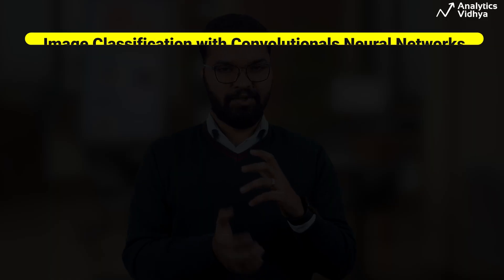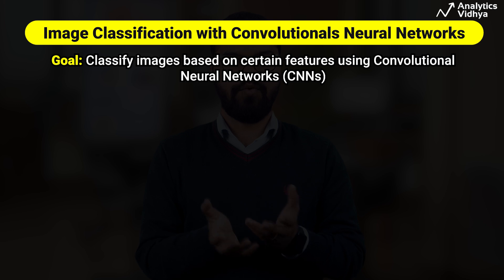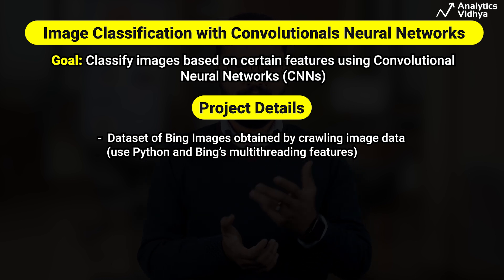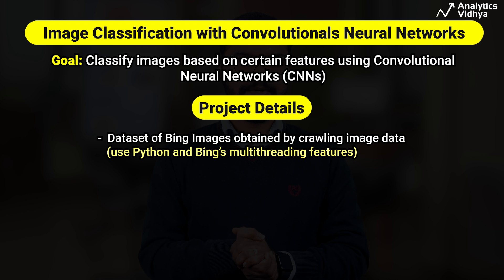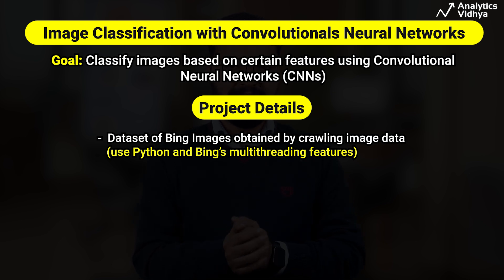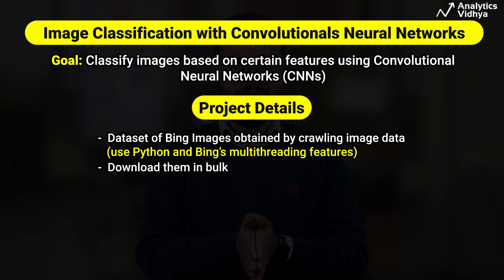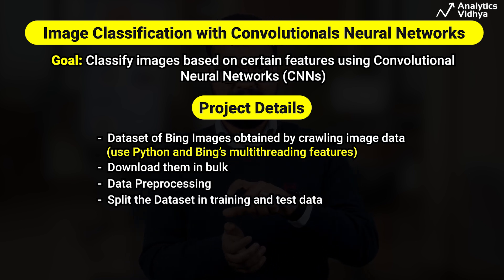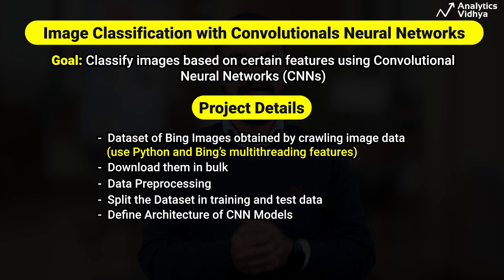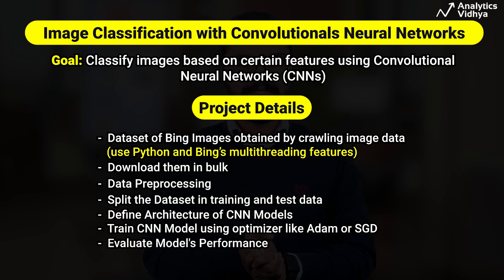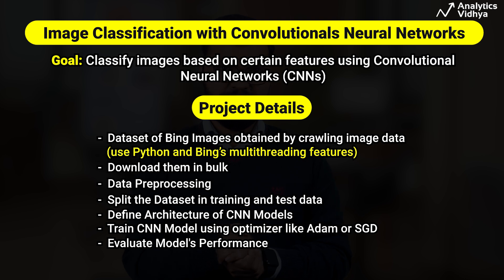Moving to advanced level projects: this project classifies images based on certain features using convolutional neural networks (CNNs). We use a dataset of Bing images crawled from URLs based on specific keywords using Python and Bing's multi-threading feature. You filter-search for the kind of images you wish to classify — for example, a cat or a dog — and download them in bulk. After data pre-processing, we split the dataset into testing and training sets, define the CNN architecture, train the model using a suitable optimizer, and evaluate the model's performance. The main aim is to show how CNNs proficiently work with image datasets for classification.